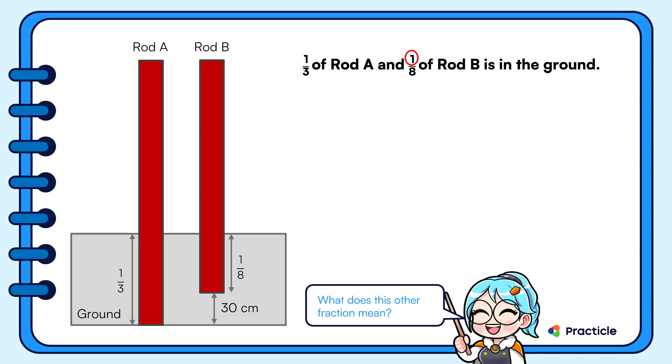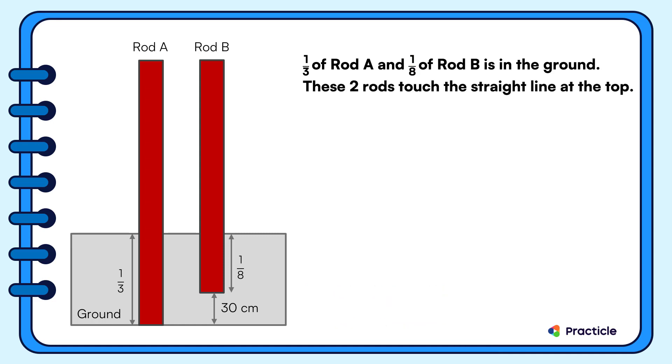Are you still with me? But then given that these 2 rods touch the straight line at the top, what are we supposed to solve? We need to find the total length of rod A and rod B. So how will you solve this?